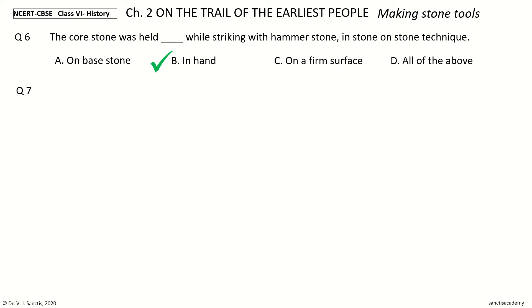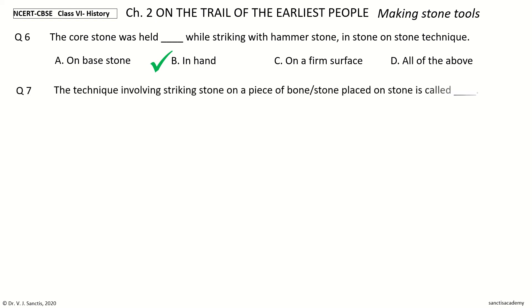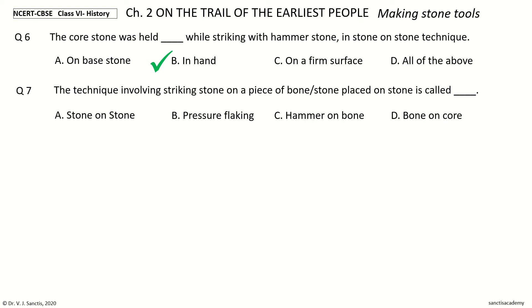Question 7: The technique involving striking a hammer stone on a piece of bone or stone placed on the core stone is called dash. The options are: stone on stone, pressure flaking, hammer on bone, bone on core. And the answer is pressure flaking.